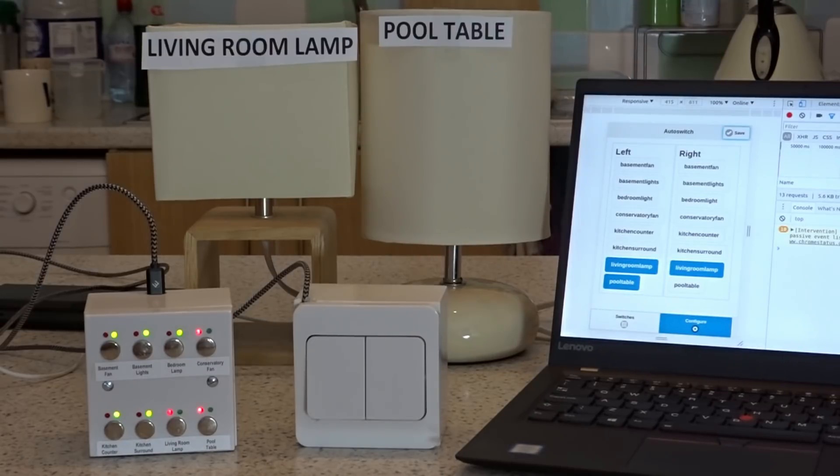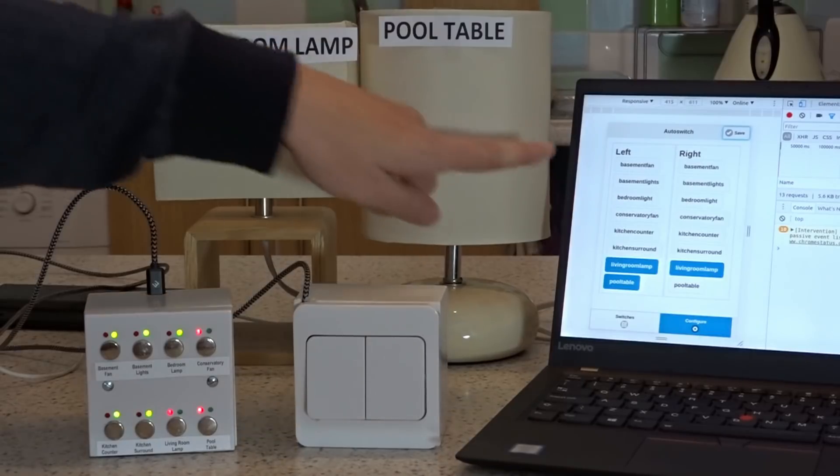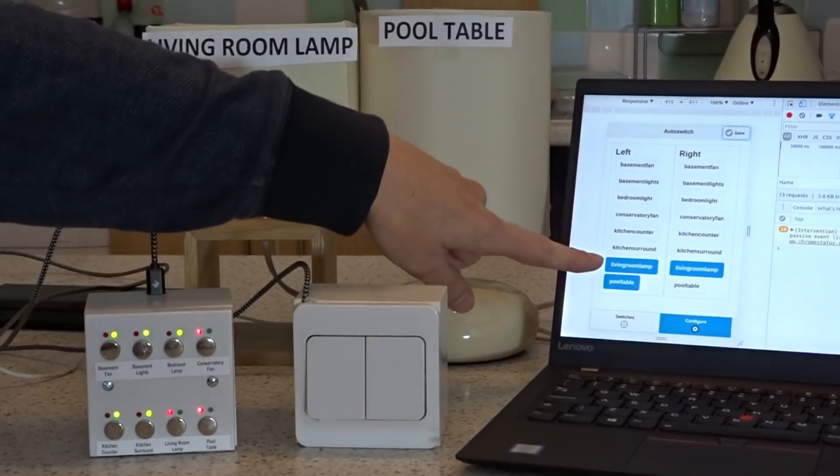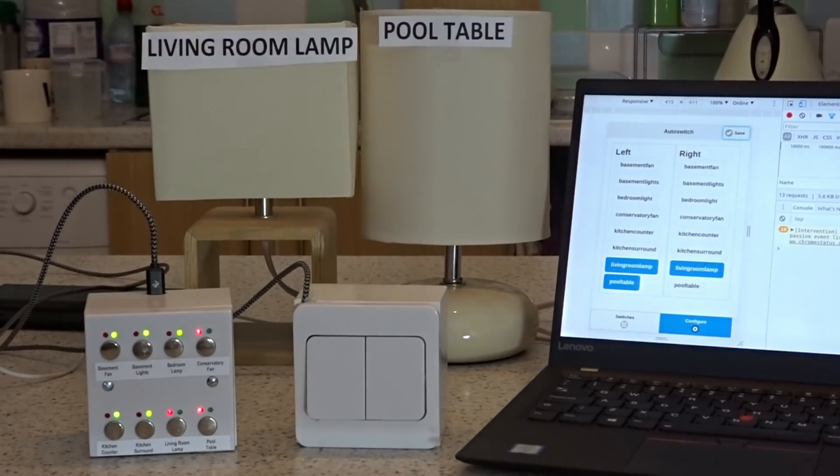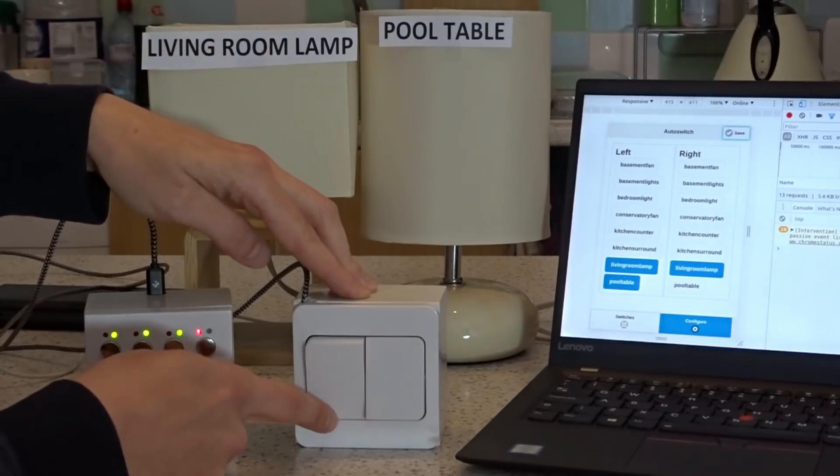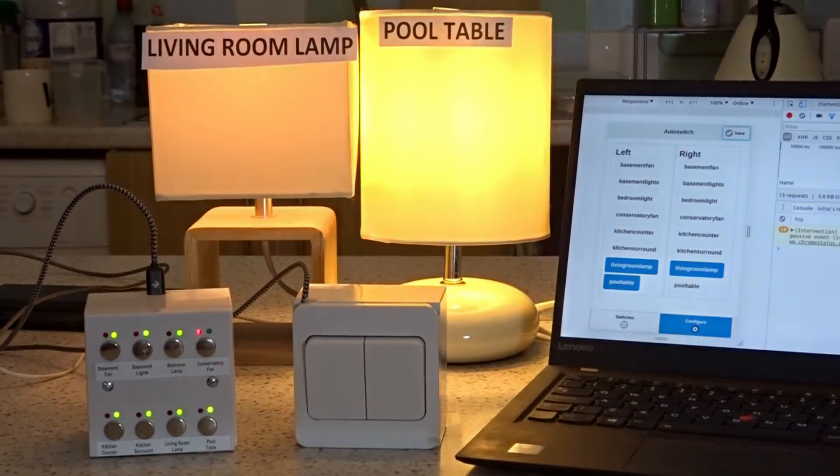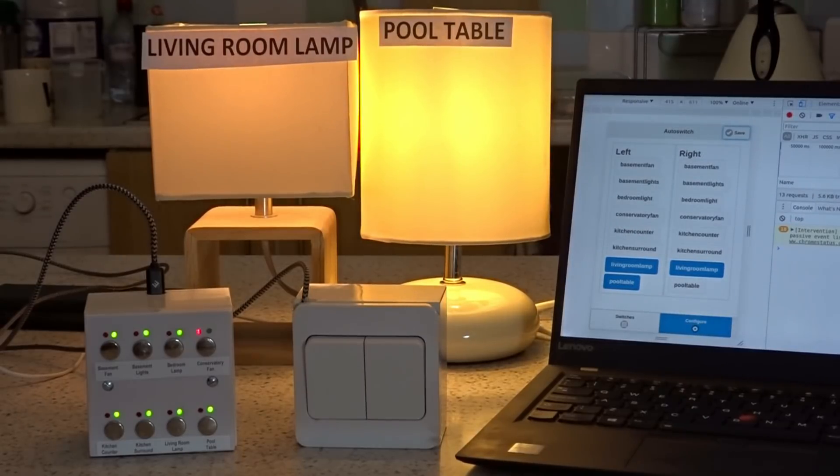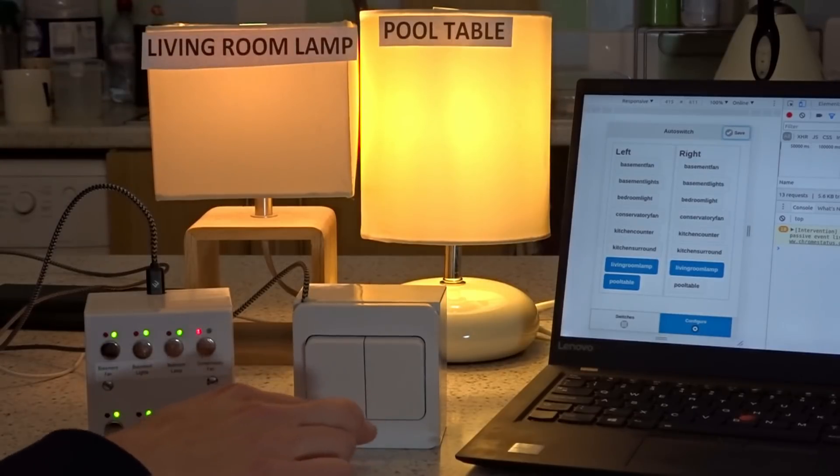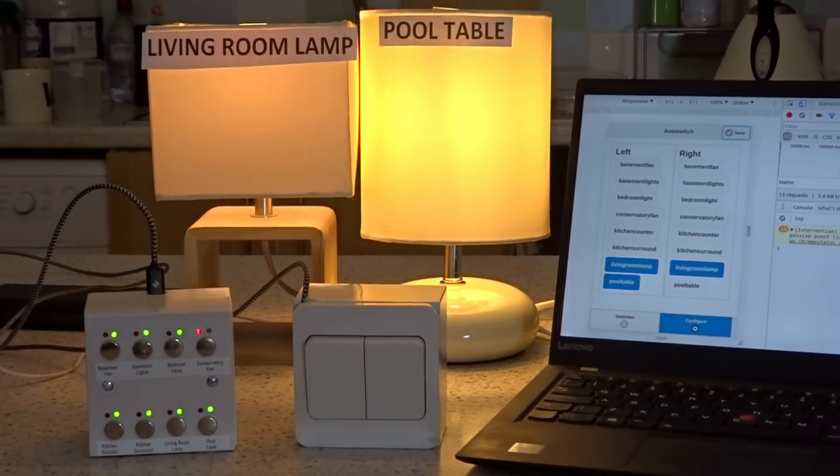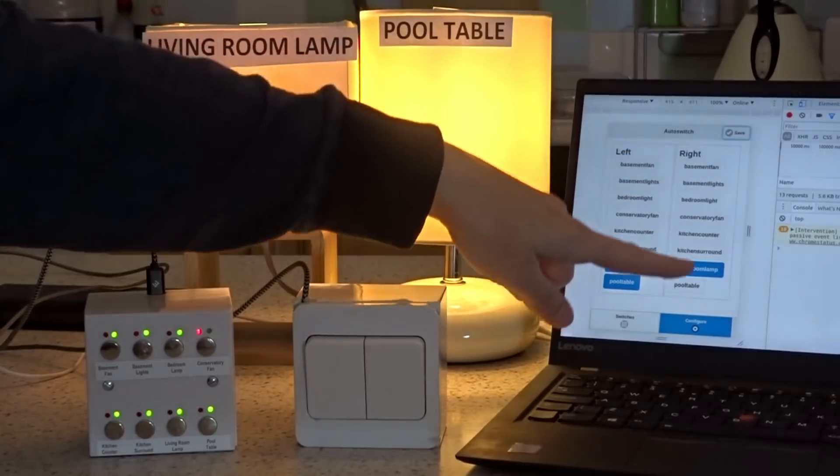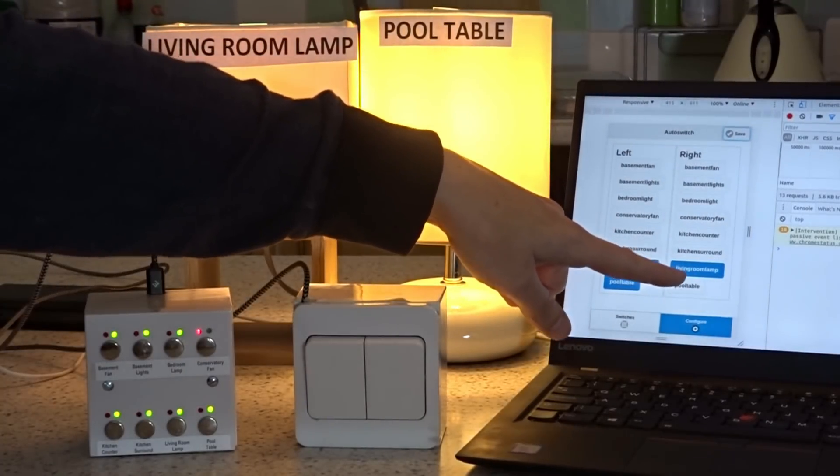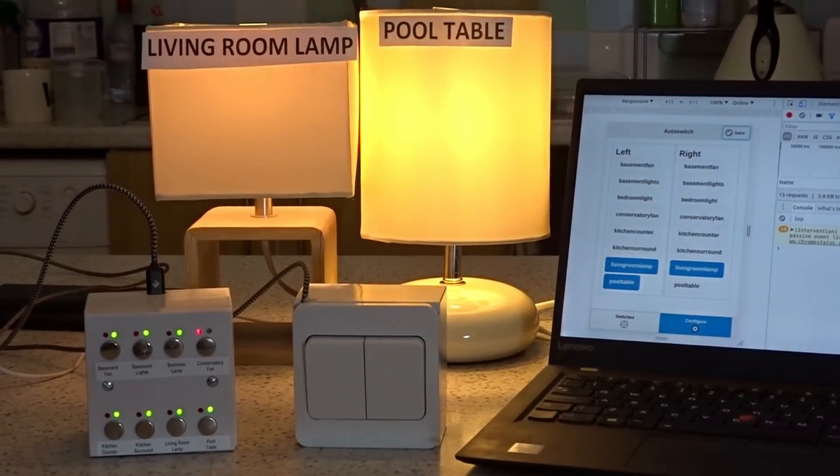So let's just start with a quick demo again. You can see here on the left hand side I have living room lamp and pool table currently configured to the left hand side switch. So if I touch that, what's happened there is not only has the living room lamp and the pool table turned on, but the right hand side switch has also switched to the on state. And that's because the living room lamp only is tied to that right hand side switch.